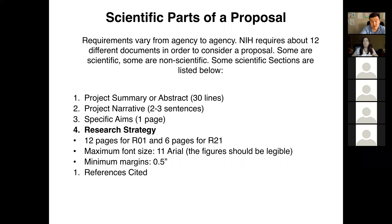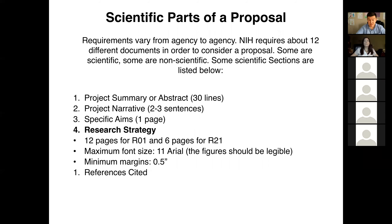Another document is the references cited. This section is not formally part of the research strategy, meaning it doesn't count toward the 12-page limit. Strictly speaking, you can have as many references as you like. In a typical proposal, you should expect 30 to 100 literature citations for an R01 proposal. For R21, this may be a slightly smaller number, but there is no limit on the number of references you cite.